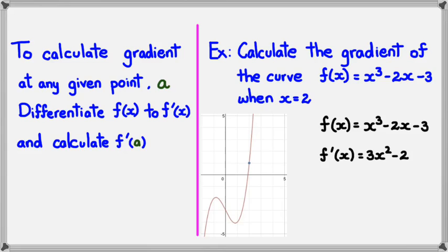At this point, we would need to substitute 2 into x to figure out what the gradient is. So f'(2) = 3(2²) - 2, and this simplifies to 12 - 2, which equals 10. So that means the gradient when x = 2 is 10.